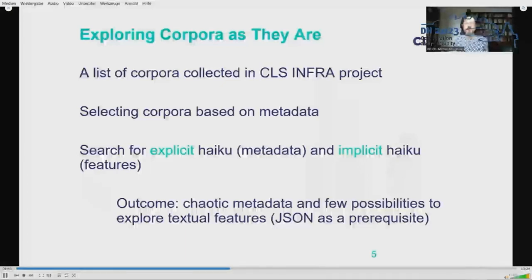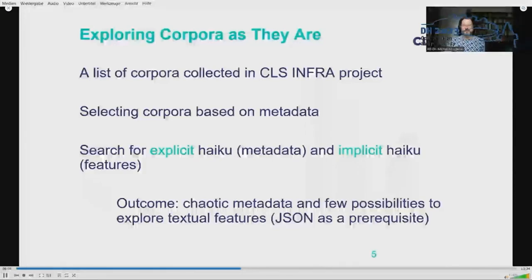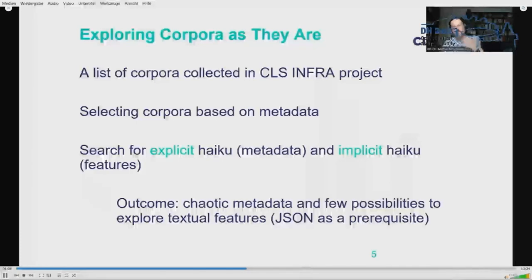Nevertheless, some corpora, such as the Scottish Corpus of Text and Speech and Project Gutenberg, contain haikus, sometimes quoted within a work of different nature — for example, a description of Japanese cultural life, which was the only result from Project Gutenberg. Of course, searching through long texts was time-consuming. Haikus cost time and energy, especially when a text doesn't label itself as haiku but merely illustrates some poems with one.